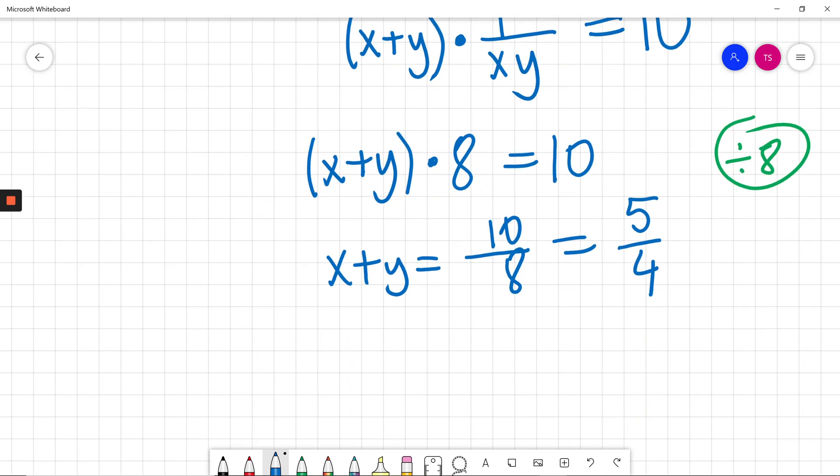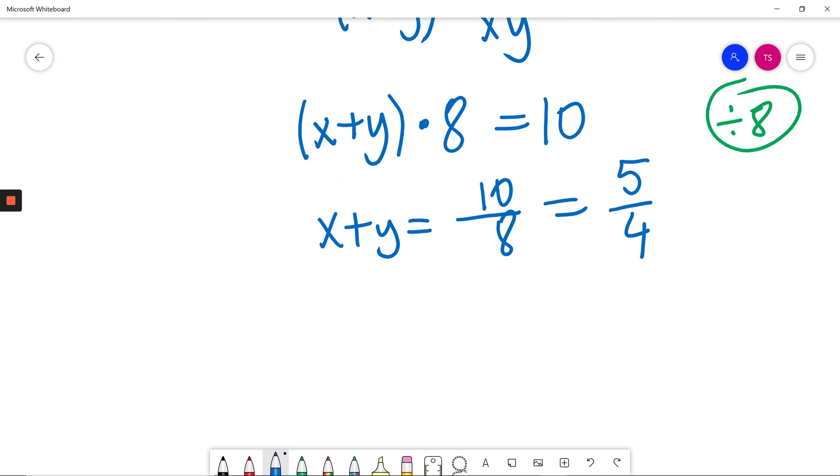Now I know x plus y is 5 fourths, but I need to find average of x and y, so I will divide both sides by 2. So x plus y divided by 2 will be 5 fourths divided by 2. So the answer for this question will be 5 eighths.